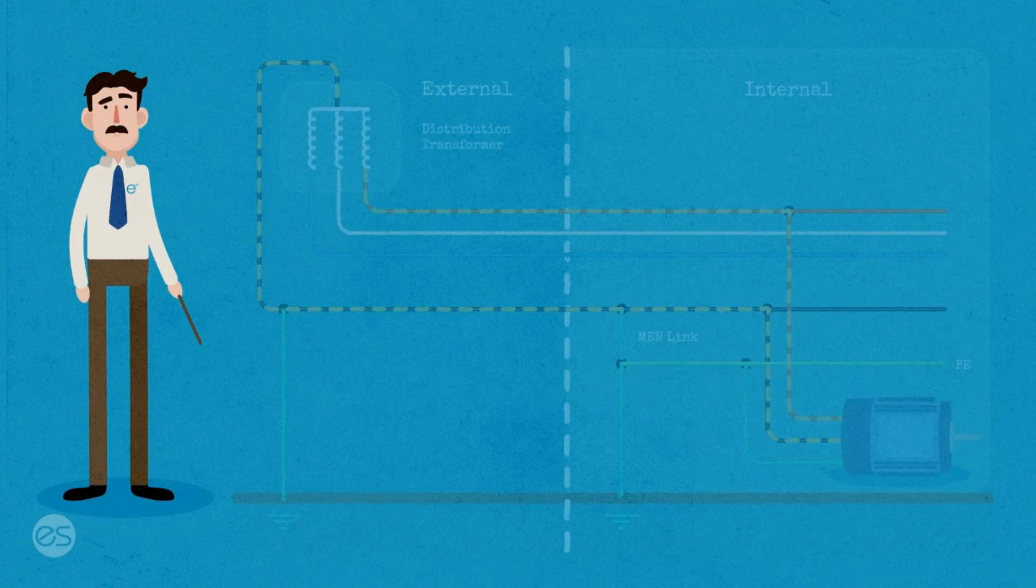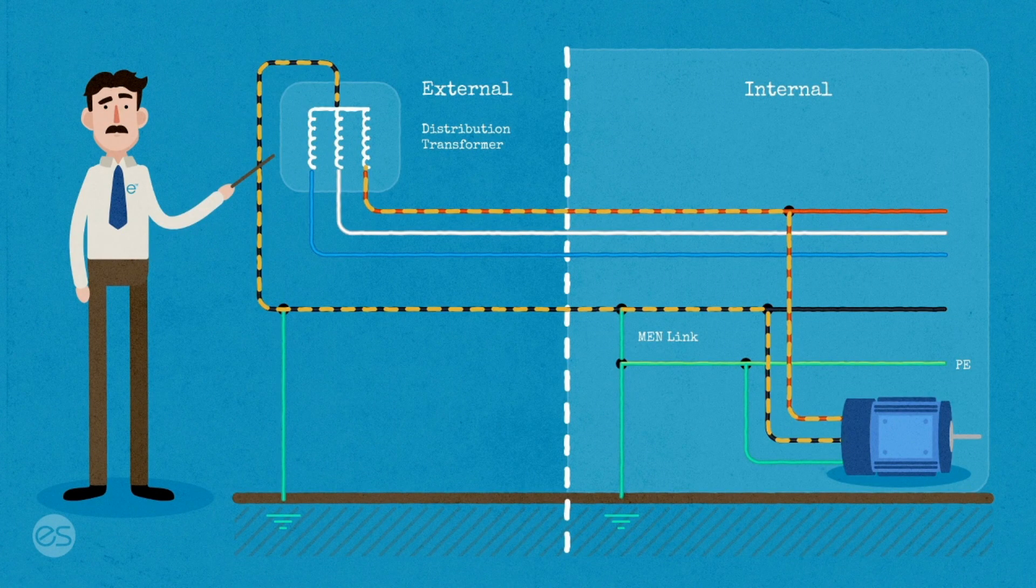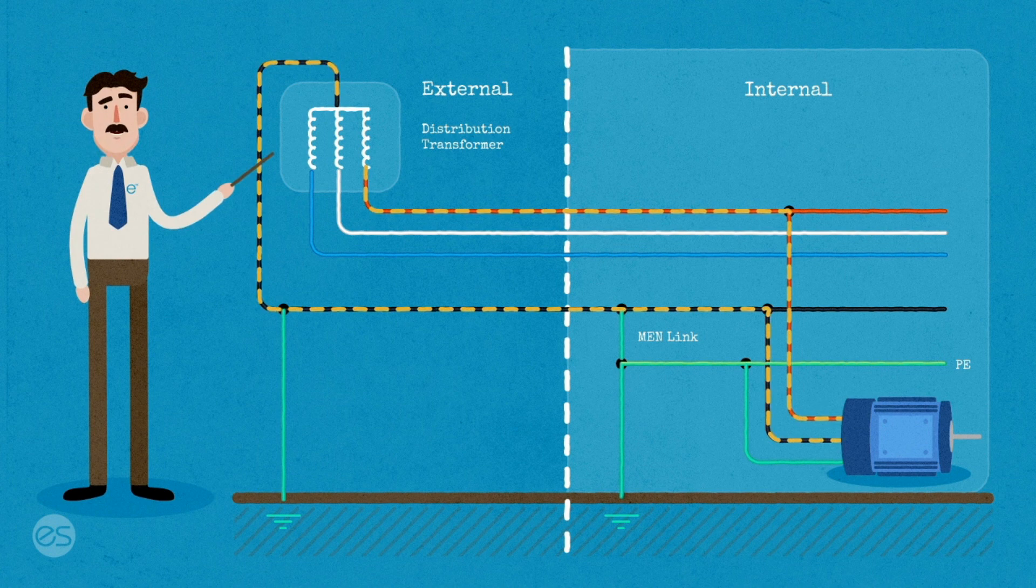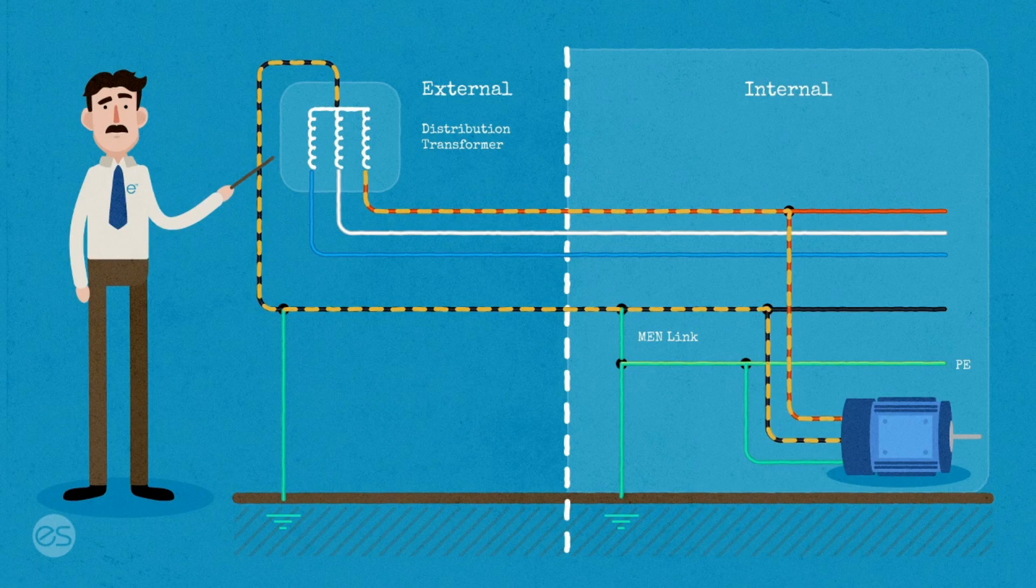Remember, our fault loop impedance path includes the supply authorities distribution transformer. So a special meter, called, funnily enough, a fault loop impedance meter, can be used to prove that our fault loop impedance is low enough to allow our circuit breaker to trip. And that's that!